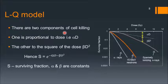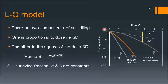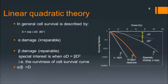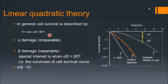In the LQ model there are two components of cell killing: one proportional to dose (alpha d) and the other proportional to dose squared (beta d squared). Hence the survival — not the effect — is equal to e to the power of minus alpha d minus beta d squared. This is exponential because it is on a logarithmic scale. Alpha represents irreparable damage and beta represents repairable damage.